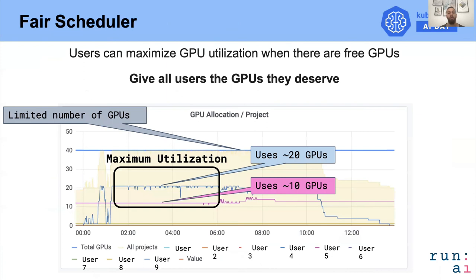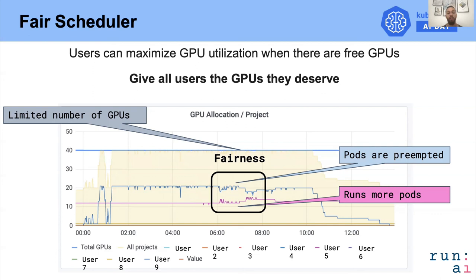Let's see an example from one of our customers. In the marked time window, you can see the blue user uses about 20 GPUs while the pink user uses about 10 GPUs. We allow the blue user to get 20 GPUs because they are available and we want maximum cluster utilization. After a few hours, in the new marked window, the pink user submits more pods. So we preempt the blue user and let the pink user use those GPUs. As you can see, the lines are getting closer to each other — this is how fairness actually looks.